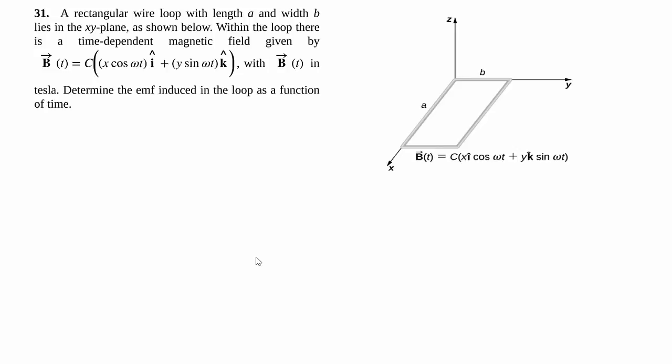So this particular question involves a regular wire loop of a certain length. Now, the good thing about this is both of these are constants, so the A is not changing. The other thing that's not changing is the orientation is not changing.